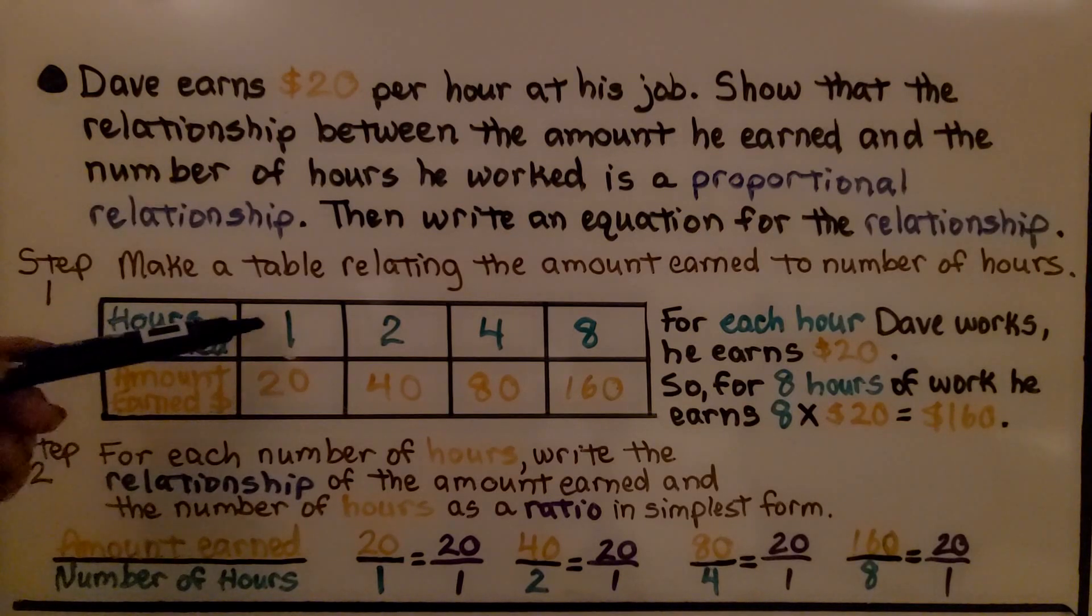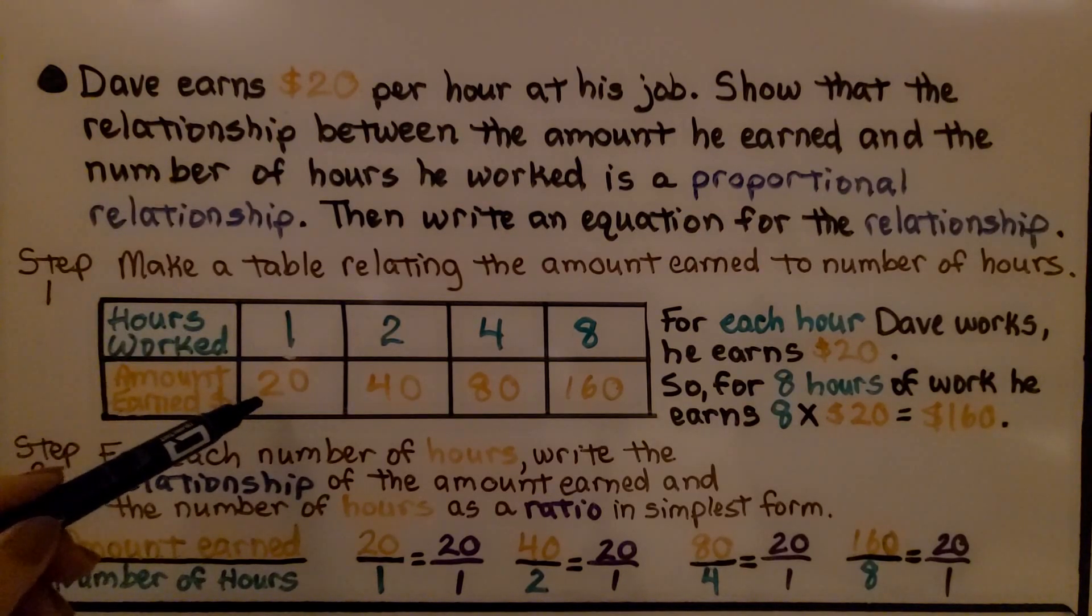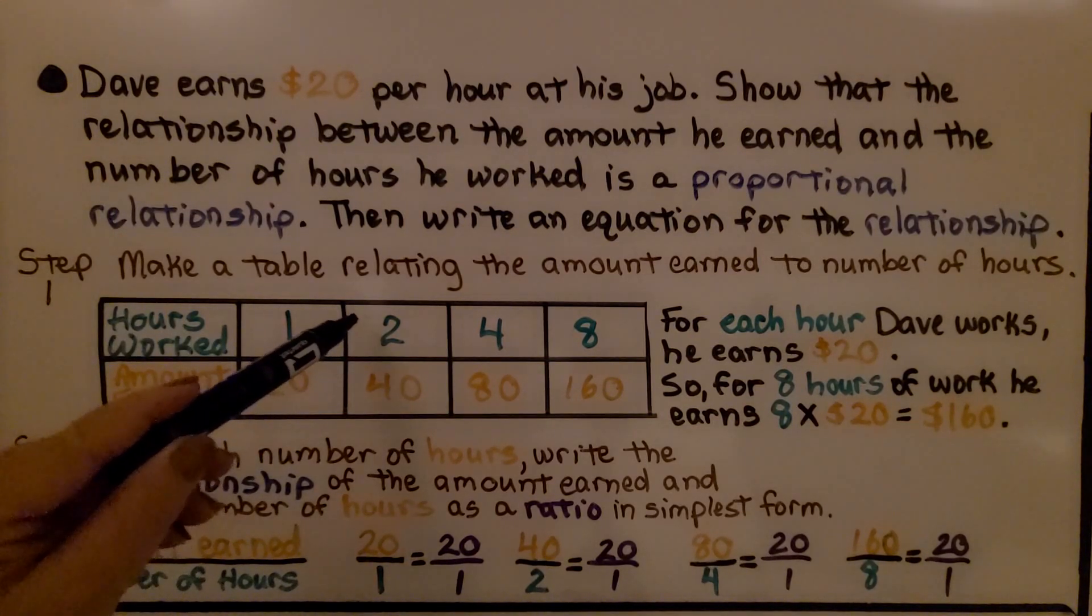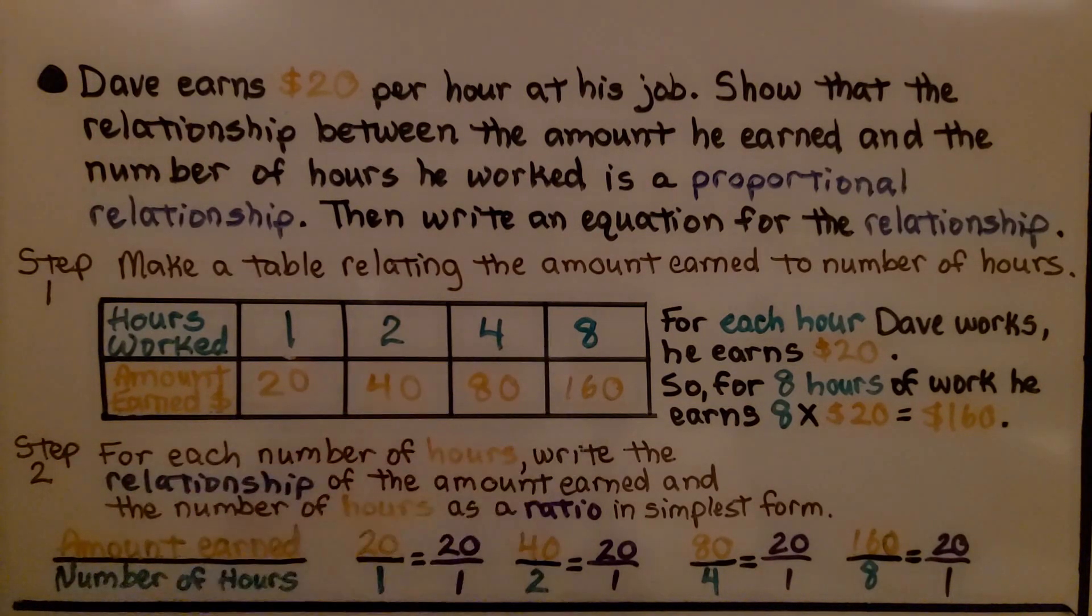So we've got, if he works 1 hour, he's going to make $20. If he works 2 hours, he's going to make $40. And we complete our table.